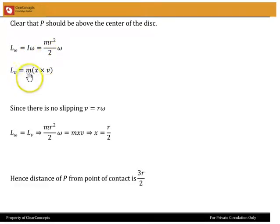Angular momentum due to v is m into x cross v. So m x v. Now there is no slipping. That is the important point. So right away we can see that v is equal to r omega.